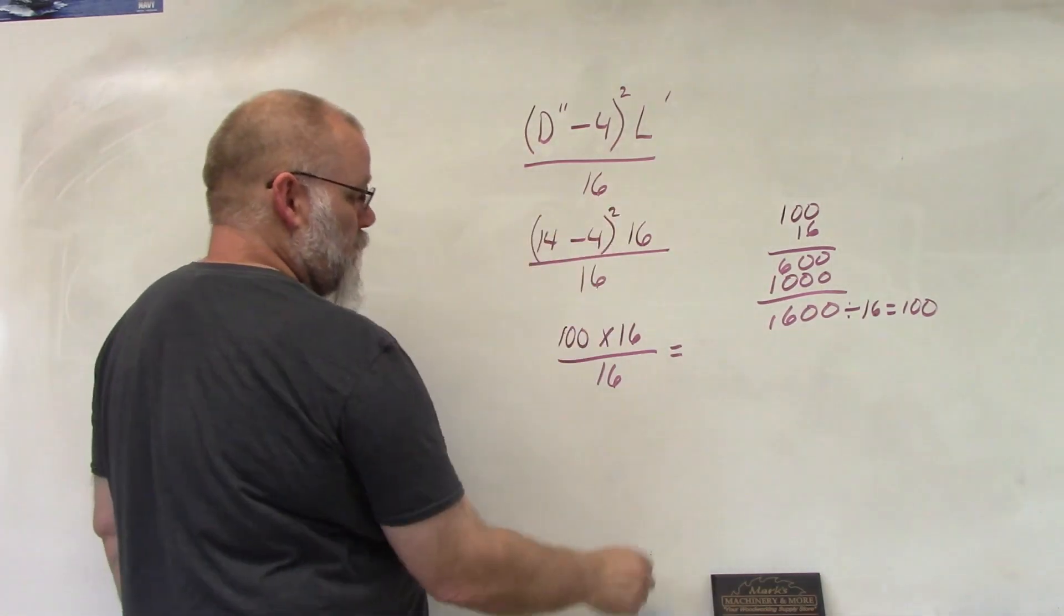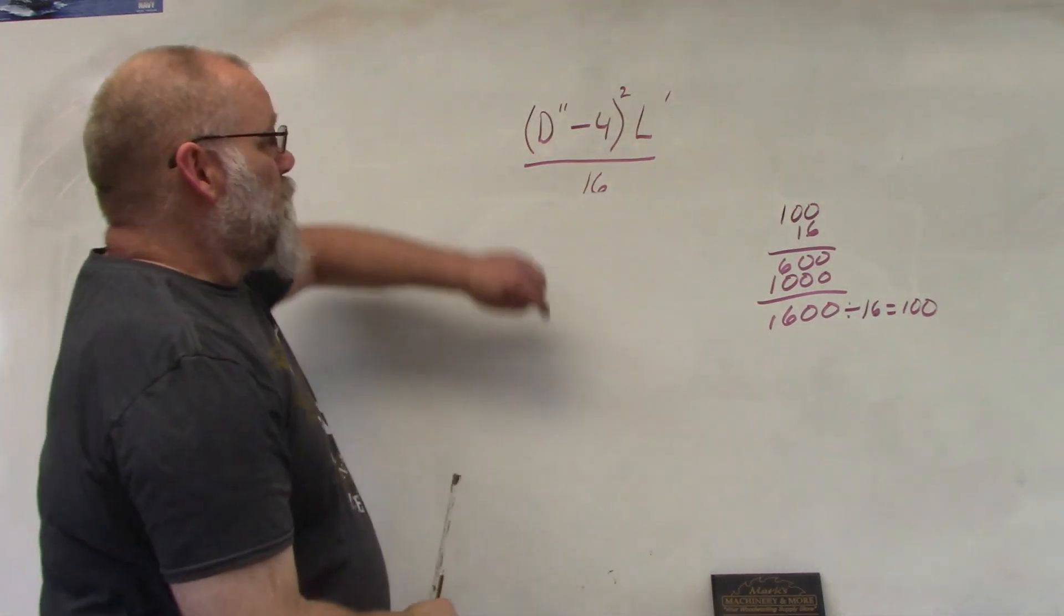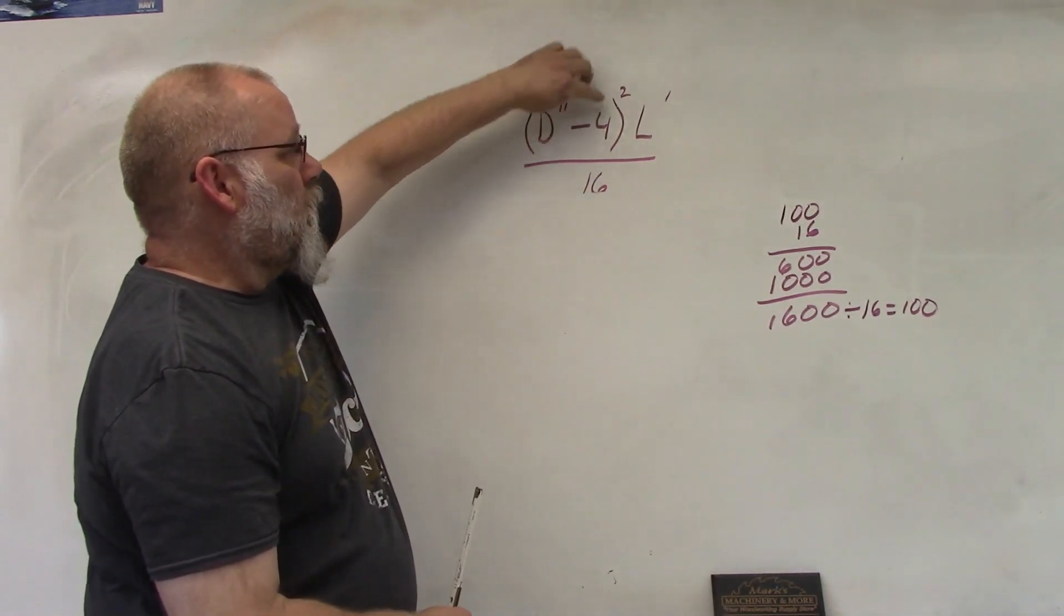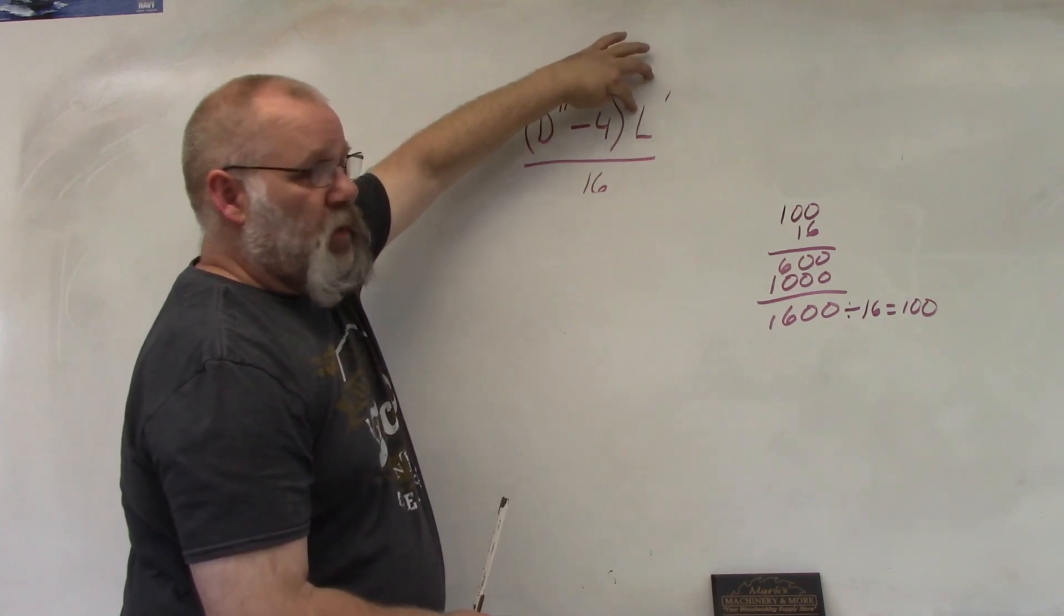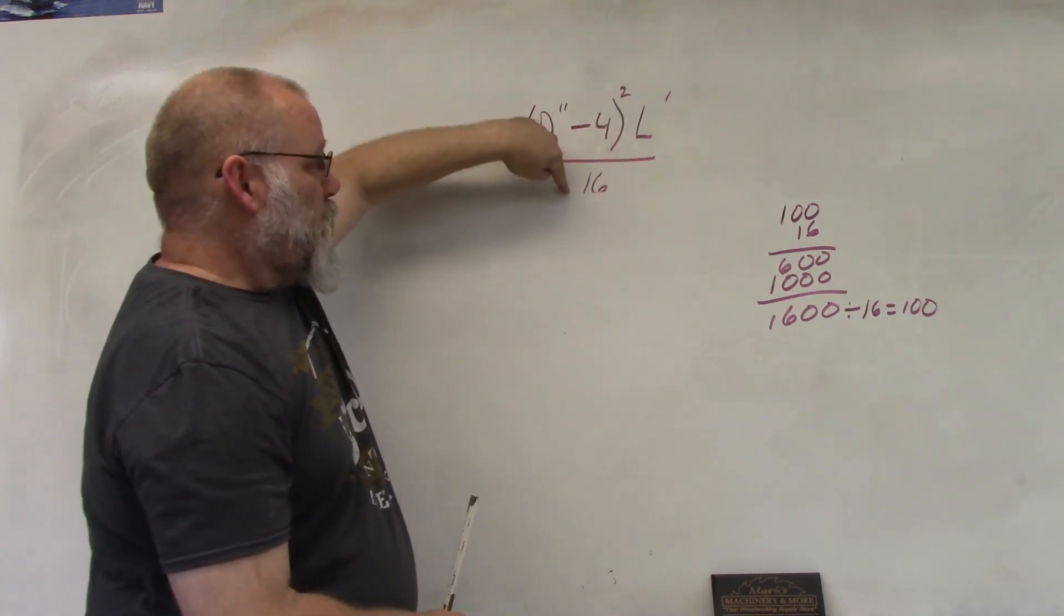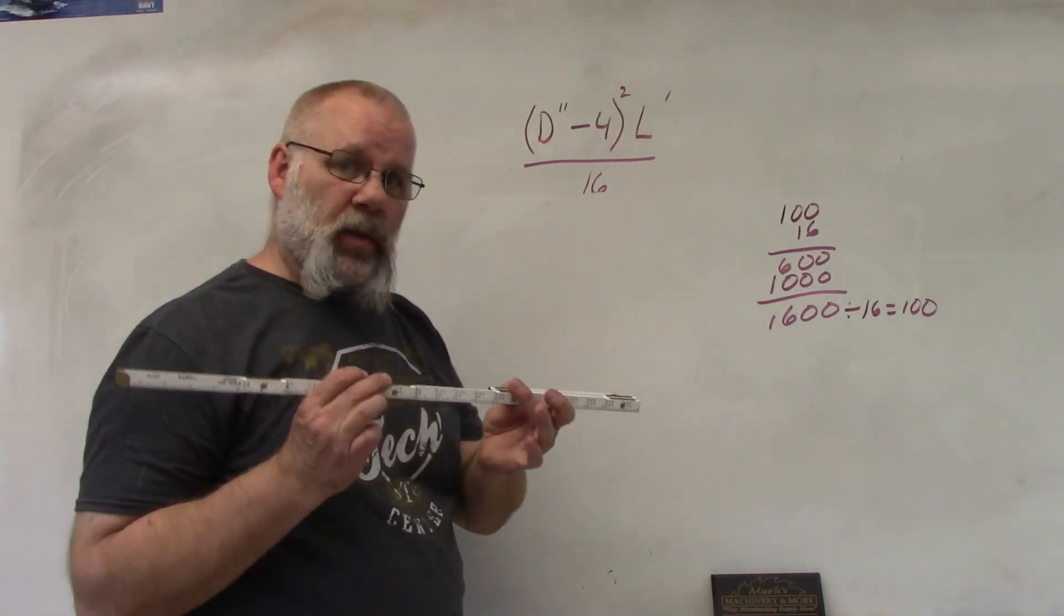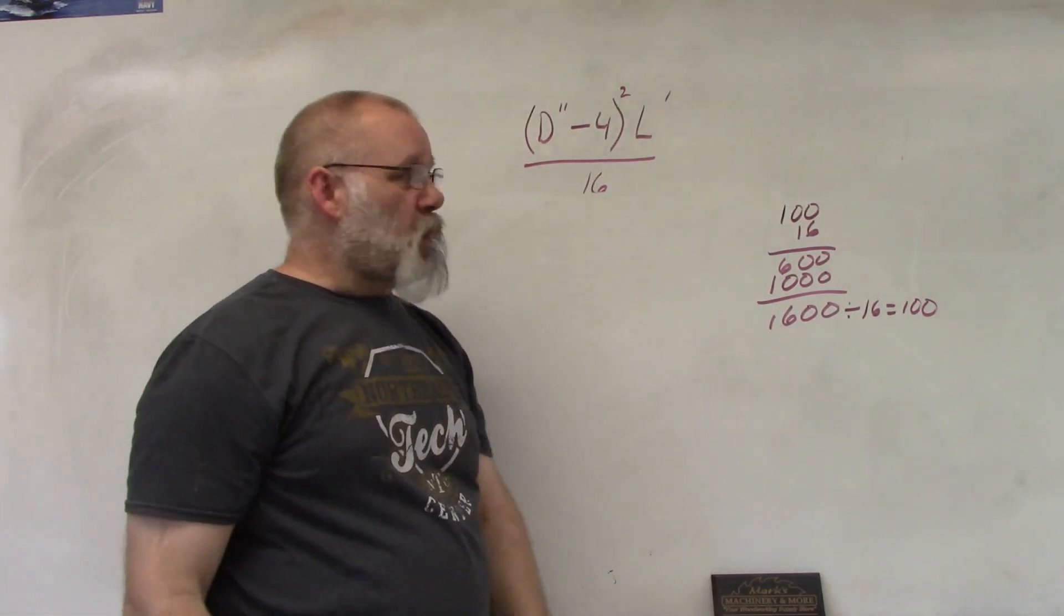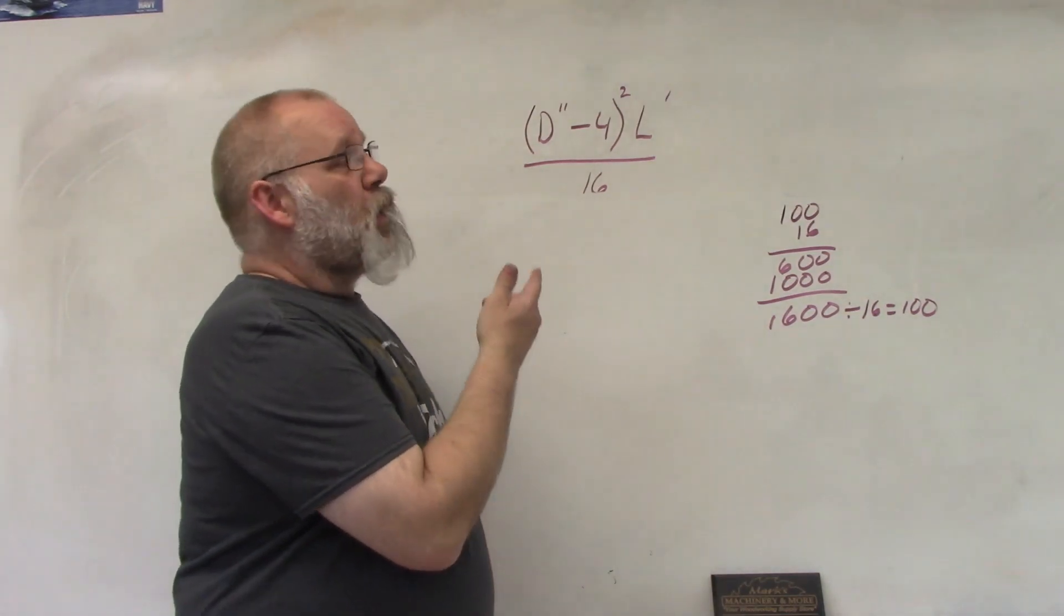The diameter of the tree in inches minus 4, squared, times itself, times the length in feet, and then you're going to divide that by 16 and you'll get the same answer that's on the folding rule. So figure using the Doyle scale mathematically.